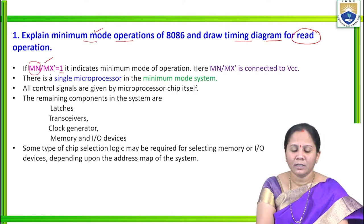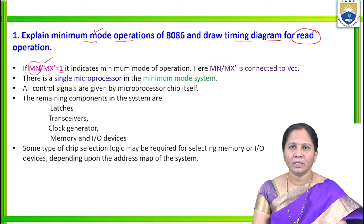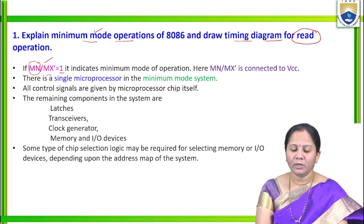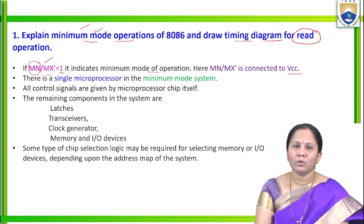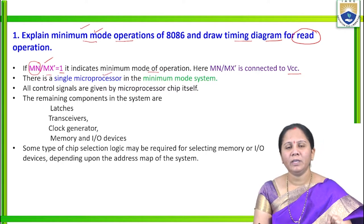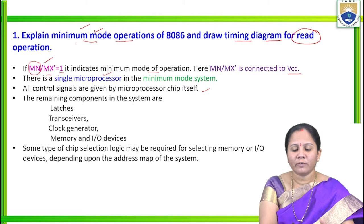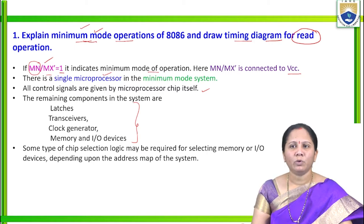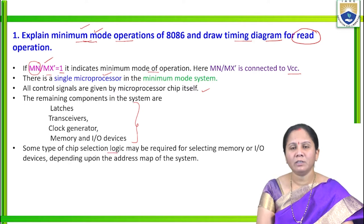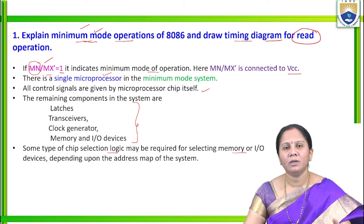In minimum mode operation, the MN/MX̄ pin must be set to 1 — connected to VCC — because MN is active high and MX̄ is active low. Setting this pin to 1 makes 8086 operate in minimum mode, which is also called single processor mode. In this mode, all the control signals are present within 8086 itself. Chip selection is used to select memory or I/O devices depending on memory mapping.